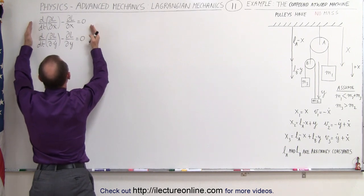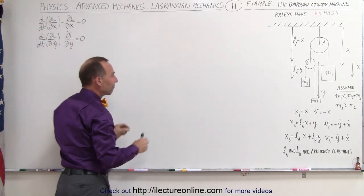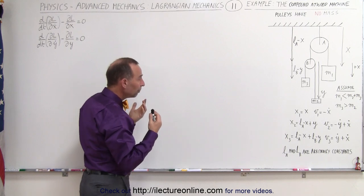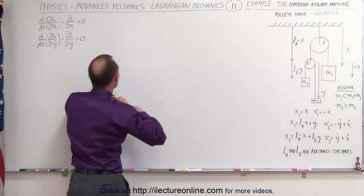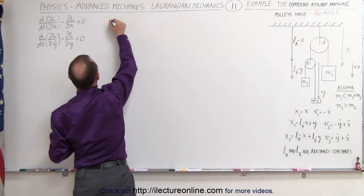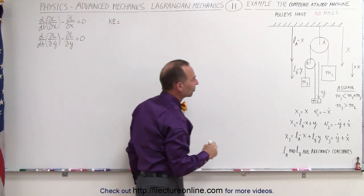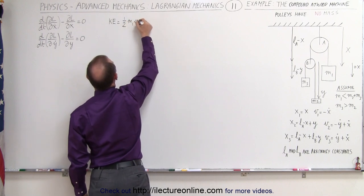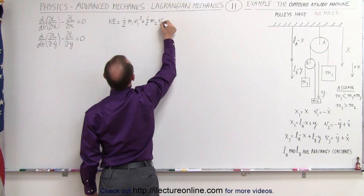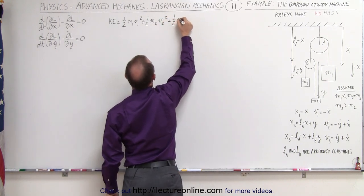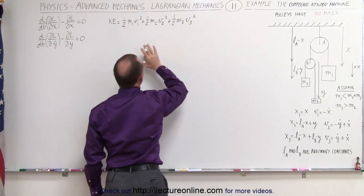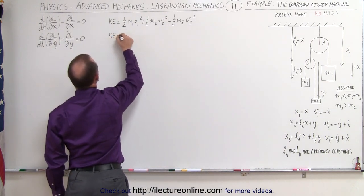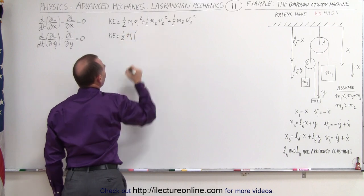The Lagrangian equation is written twice — once for the x coordinate and once for the y coordinate — since we have two independent coordinate systems. They share the same kinetic and potential energy equations. The kinetic energy has three moving objects, M1, M2, and M3, giving us: T = one-half M1 V1² + one-half M2 V2² + one-half M3 V3².